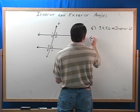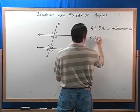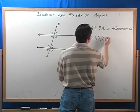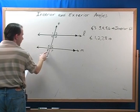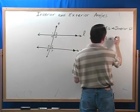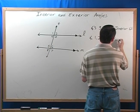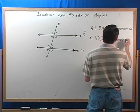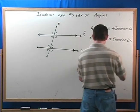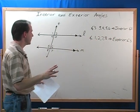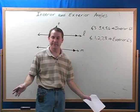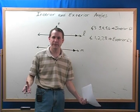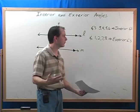And angles one, two, seven, and eight, they are called one, two, seven, and eight. They are called exterior angles. Now remember, this is only a definition. This actually doesn't have anything to do with math. This is just teaching you the terms so that you can follow along and do the problems.